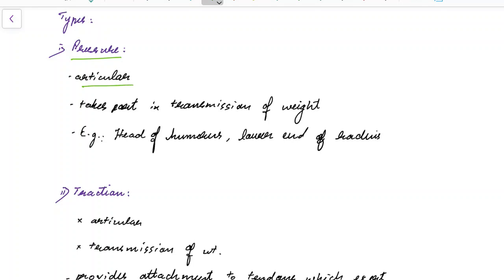Pressure Epiphysis are Articular Epiphyses and they take part in transmission of weight. Examples include Head of Humerus and Lower End of Radius.